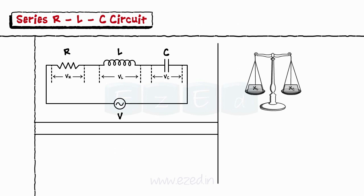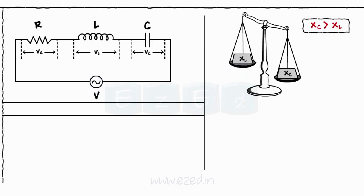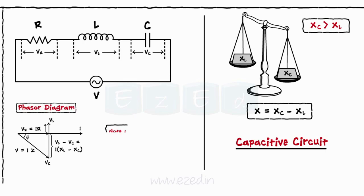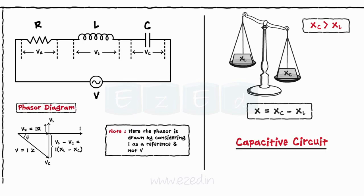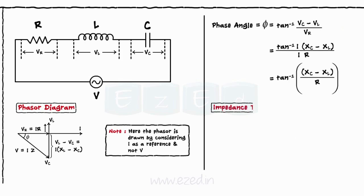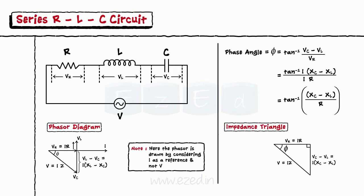Now consider the second case in which XC is greater than XL. The capacitor dominates over the inductor and the net reactance becomes XC minus XL. The total voltage remains V equals VR plus VL plus VC, with VC greater than VL. As the circuit becomes capacitive, the current leads the voltage by angle phi, and the phase angle becomes tan inverse of (XC minus XL) upon R. The impedance triangle and phasor diagrams change significantly.